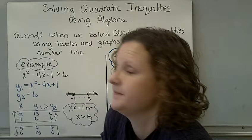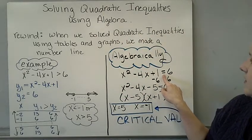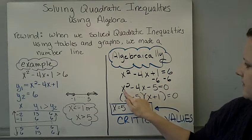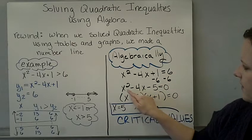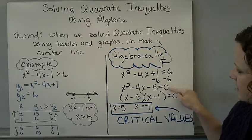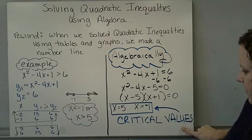Now algebraically. The inequality is no longer there, and we have an equal sign. So we get everything, all of our variables and our constants on the left side of the equal sign, set it equal to 0, factor it, and solve. These are called our critical values.